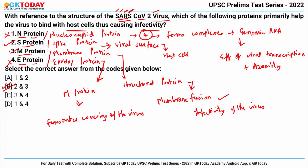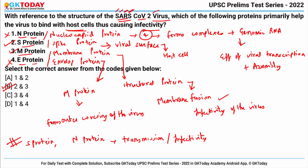Why was this question in the news? Because researchers recently shared that apart from S-protein (spike protein), other proteins in the COVID-19 virus such as M-protein also play a significant role in its transmission and infectivity, and M-protein has higher infectivity than the other proteins.